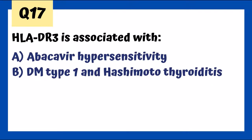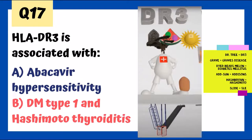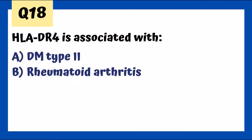HLA-DR3 is associated with diabetes mellitus type 1, Hashimoto thyroiditis, Graves' disease, Addison's disease, and SLE. HLA-A3 is associated with hemochromatosis. HLA-DR4 is associated with rheumatoid arthritis — four corners to a room for rheumatoid arthritis.